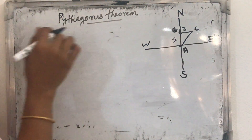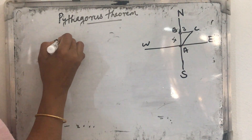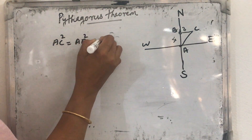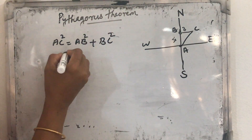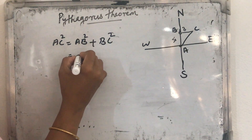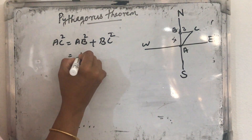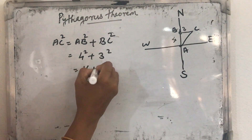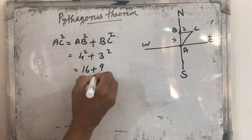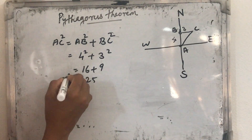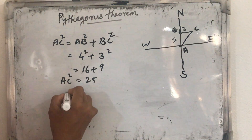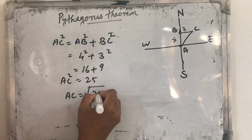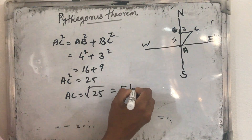So here we can use the Pythagoras theorem. Give the name ABC to this triangle. Using Pythagoras theorem, AC² = AB² + BC² = 4² + 3² = 16 + 9 = 25. So AC = √25 = 5 km.